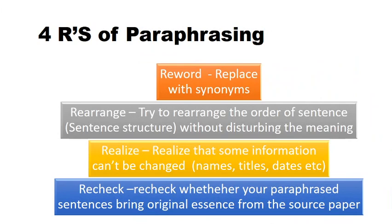The four R's of paraphrasing — this is the central strategy, the center attraction of paraphrasing, and you can easily remember it. The first R is reword: try to reword the original idea with synonyms and other words. The second R is rearrange: try to rearrange the given structure — the order of the sentence — into a new structure, probably from A to B to B to A, without disturbing the meaning. It is not simply rearranging the sentence; if it disturbs the meaning, then there is no point in doing the paraphrasing.